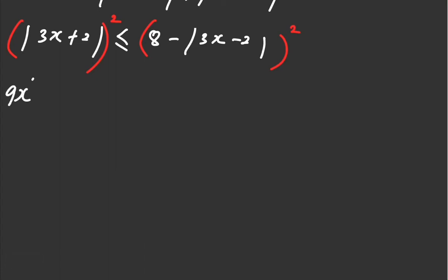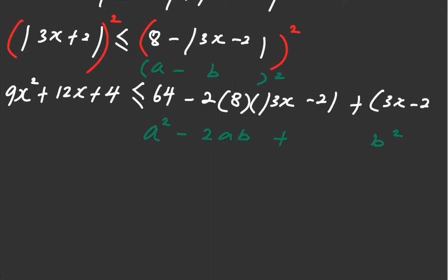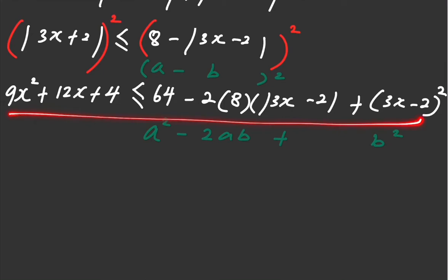Expand it. This is the part I need to guide you. Imagine this is (a − b)². When you expand it, you have a² − 2ab + b². So you get 64 − 2ab + b². The modulus is gone because you squared it — when you square it, the modulus is no longer significant. However, there is still a modulus here in the inequality that we need to deal with later, and there is also a power of 2 here that you need to expand.